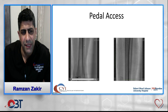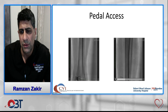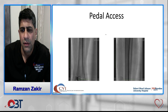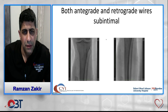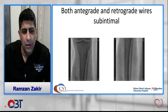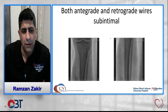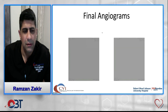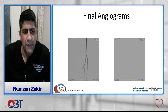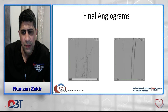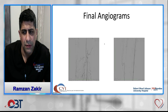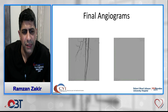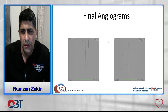Due to heavy calcium, the wire was unable to remain in the true lumen and went subintimal. With wires in both subintimal planes, we performed a reverse CART technique to redirect the wire into the true lumen. The final angiogram shows the anterior tibial artery looks great. This was achieved with PTA and drug-eluting stents placed in the anterior tibial artery.